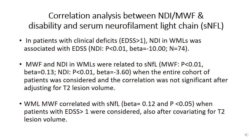Then, we investigated the potential correlation between advanced MRI measures like myelin water fraction and NDI and clinical parameters like EDSS as a measurement of disability and serum neurofilament. Our results showed that in patients with clinical deficits with EDSS more than one, NDI in white matter lesions was associated with EDSS. Also, we found that myelin water fraction and NDI in white matter lesions were correlated to serum neurofilament when the entire cohort of patients was considered. However, this correlation was no longer significant after adjusting for T2 lesion volume. Also, we have shown that myelin water fraction in white matter lesions could be well correlated with serum neurofilament in patients with EDSS more than one, and even after adjustment for T2 lesion volume, this level of significance remained.